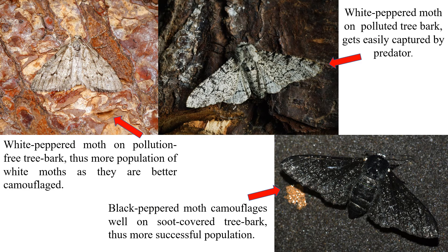Bernard Kettlewell was the first to investigate the evolutionary mechanism behind the peppered moth adaptation between the years 1953 and 1956. He found that a light-colored body was an effective camouflage in a clean environment, while the dark color was beneficial in a polluted environment. This selective survival was due to birds which easily caught the dark moths on clean trees and white moths on trees darkened with soot. The story supported by Kettlewell's experiment became the canonical example of Darwinian evolution and evidence for natural selection in a polluted environment.